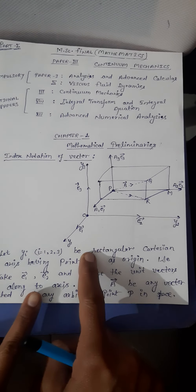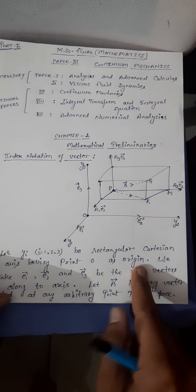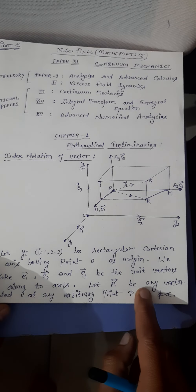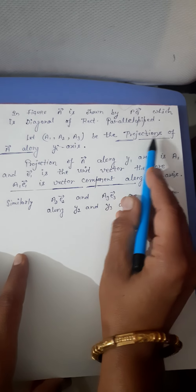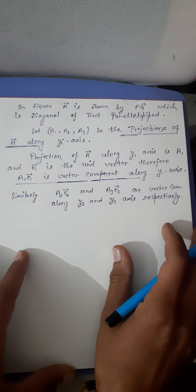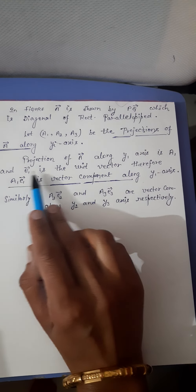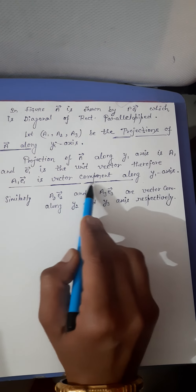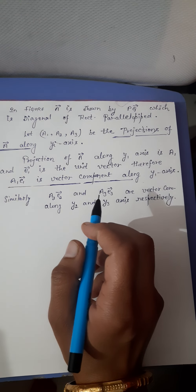So the diagram has been explained in detail. Let yi be the rectangular Cartesian axes with origin O. e1, e2, e3 are the unit vectors along the axes. Capital A is any vector situated at point P, shown by PQ which is the diagonal of the rectangular parallelepiped. A1, A2, A3 are the projections of A along the yi axes. A1·e1 is the vector component along y1; similarly A2·e2 and A3·e3 are vector components along y2 and y3 axes respectively.